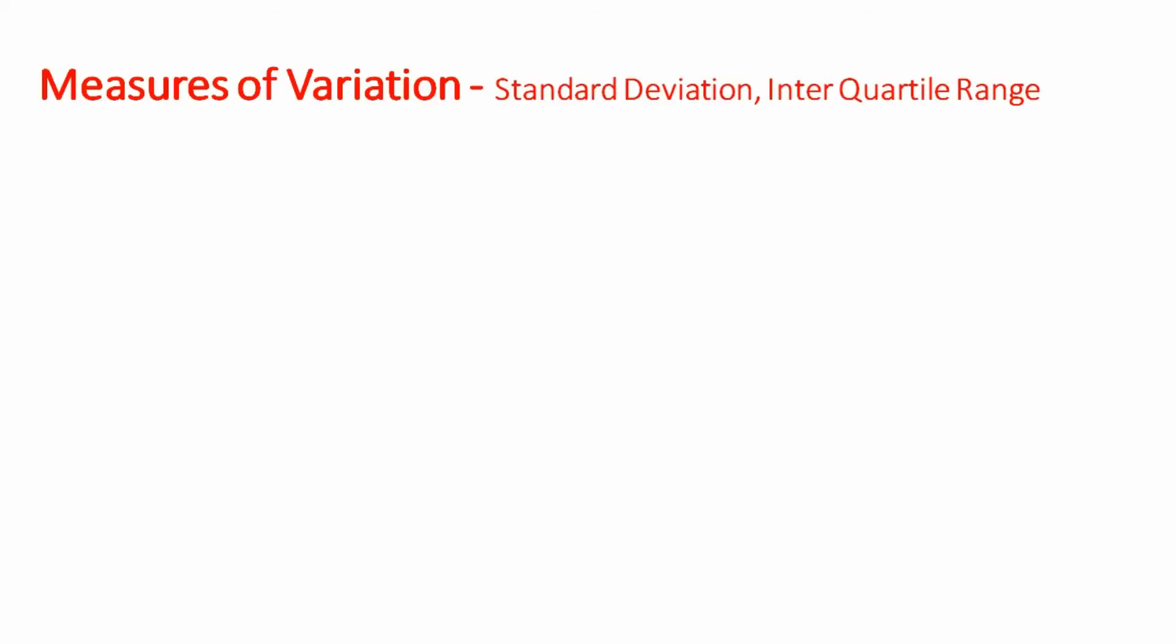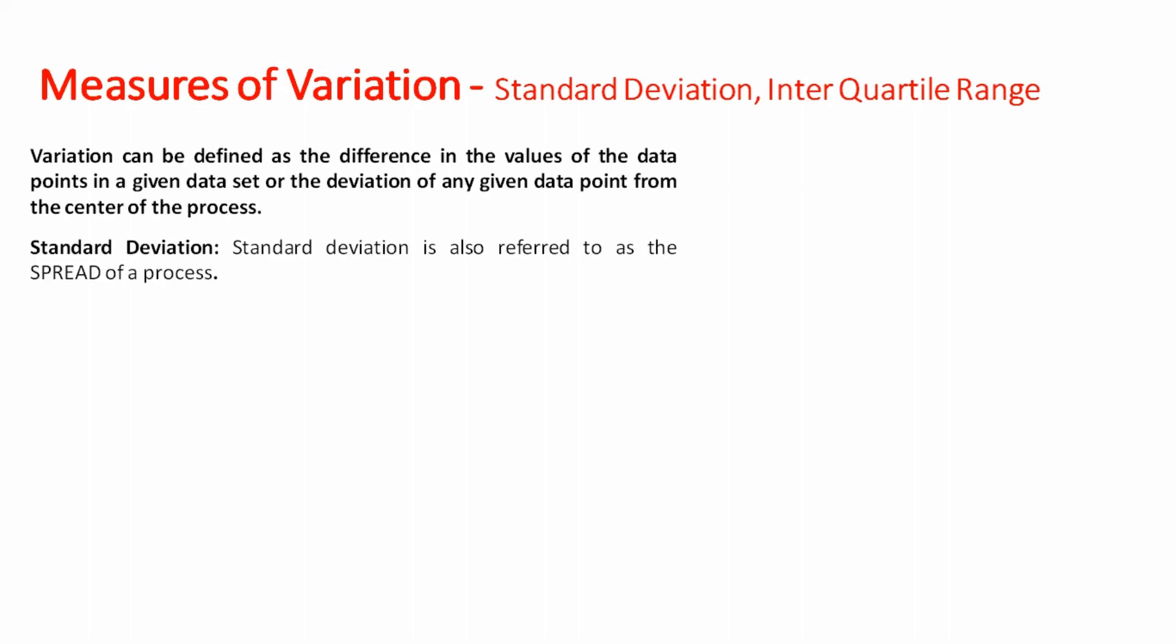Measures of variation: Standard deviation and interquartile range. Variation can be defined as the difference in the values of the data points in a given data set or the deviation of any given data point from the center of the process. Standard deviation is also referred to as the spread of a process. Formula to calculate standard deviation is x minus x bar whole square sum of that divided by n. It becomes n minus 1 when we are working with samples.